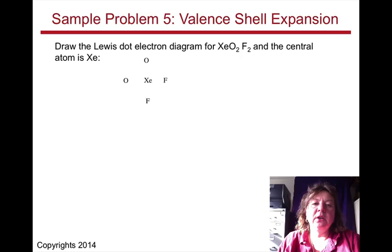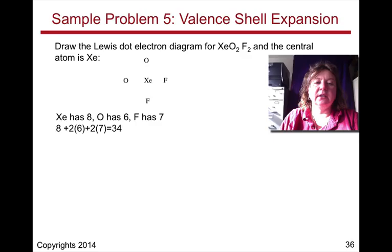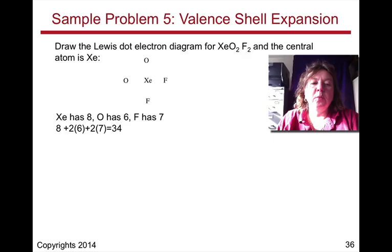Let's draw the Lewis dot diagram for XeO2F2, and we'll spot you the central atom as being xenon. So here is our skeletal structure, xenon in the middle, oxygen, oxygen, fluorine, and fluorine.